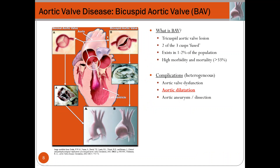We can have a normal tricuspid valve or a bicuspid valve, which can be caused by the fusion of two leaflets of the natural tricuspid valve, or it can be a true bicuspid valve with just two leaflets. Bicuspid aortic valve is a disease affecting one to two percent of the population with high morbidity and mortality. Complications include aortic valve dysfunction, aortic dilatation, aortic aneurysm, dissection, and in worst cases, aortic rupture — a life-threatening condition.